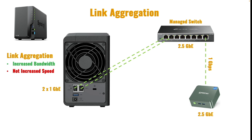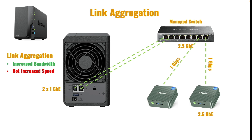What link aggregation does is provide more 1Gb connections to the NAS. For example, if I were to connect another client to the switch, that client would also get up to a 1Gb connection to the NAS, rather than needing to share a single 1Gb connection if link aggregation wasn't configured. Hopefully that makes sense.